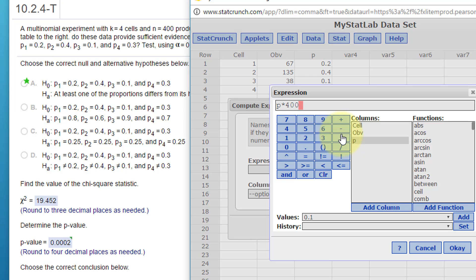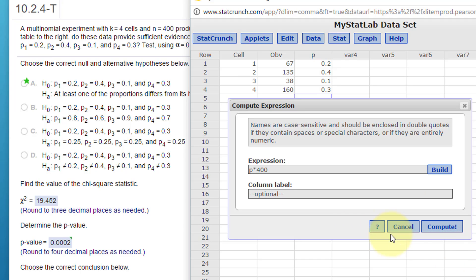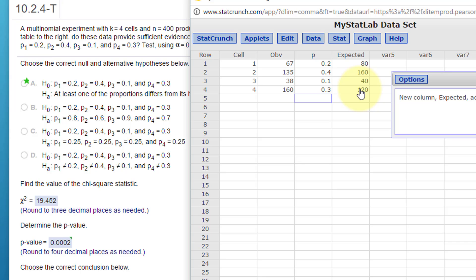We're going to call this expected and click on compute. So now we've got a column with expected and we've got observed.